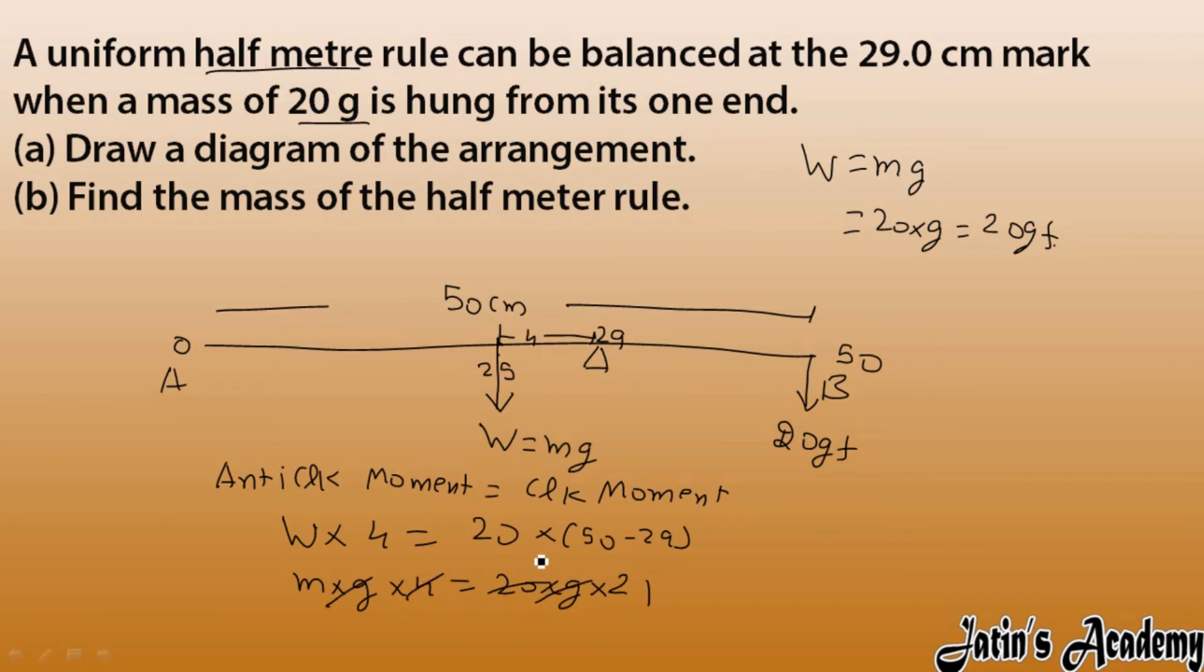And here I got 5. So 5, 5 ones of 5 and 5 to the 10, so 105 grams. So this is the weight. So second part, I can say find the mass of the half meter rule, that is 105 grams is the mass of the rule.